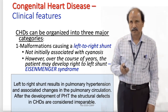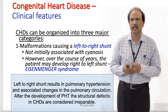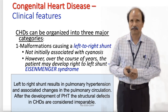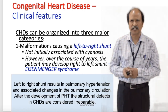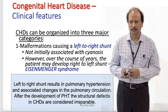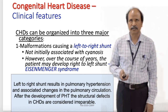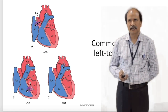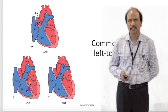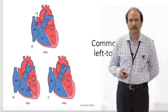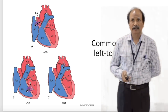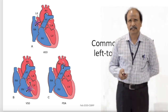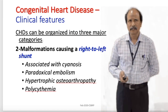Congenital heart diseases with right to left shunts are associated with cyanosis from birth. Those with left to right shunts may not have cyanosis initially, but over time they may develop cyanosis due to reversal of the shunt — this is known as Eisenmenger syndrome. Common examples of left to right shunts are atrial septal defect, ventricular septal defect, and patent ductus arteriosus.